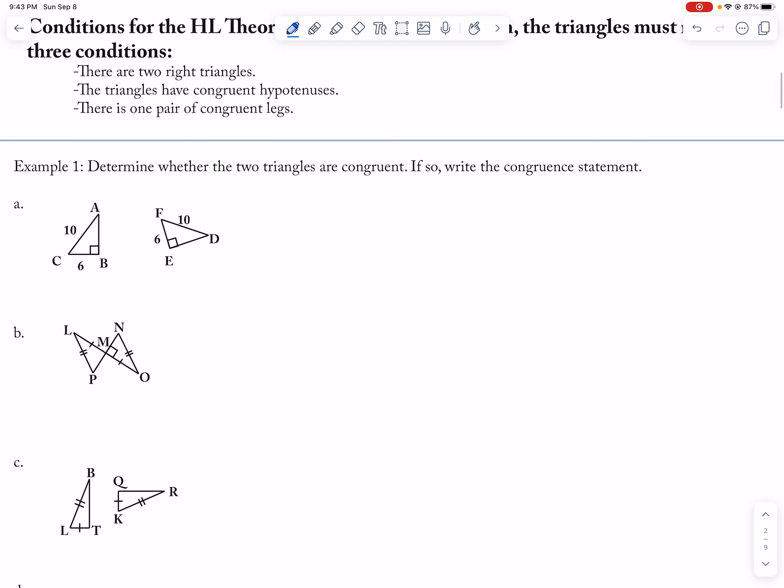So like if I look here, hypotenuse is congruent, it's a right angle, one of the legs is congruent. So triangle BCA is congruent to triangle EFD by the HL theorem.